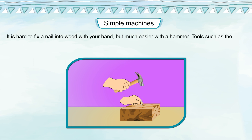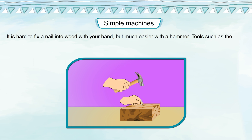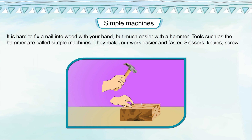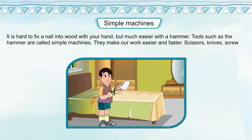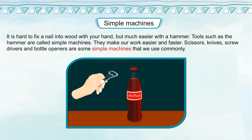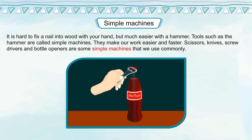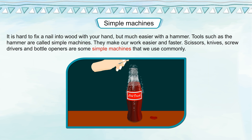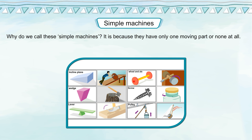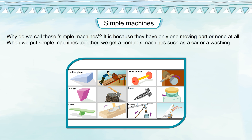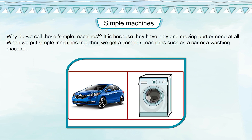Simple machines: It is hard to fix a nail into wood with your hand, but much easier with a hammer. Tools such as the hammer are called simple machines. They make our work easier and faster. Scissors, knives, screwdrivers and bottle openers are some simple machines that we use commonly. They have only one moving part or none at all. When we put simple machines together, we get complex machines, such as a car or a washing machine.